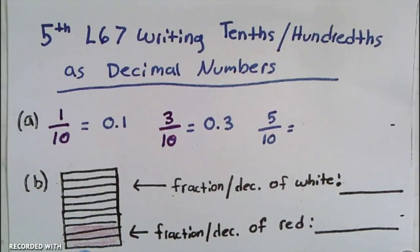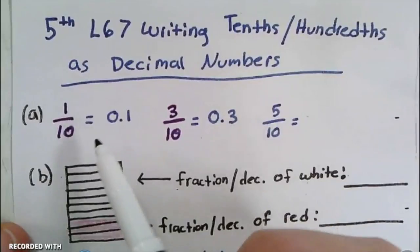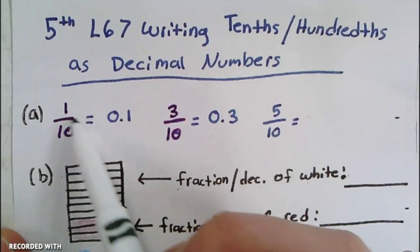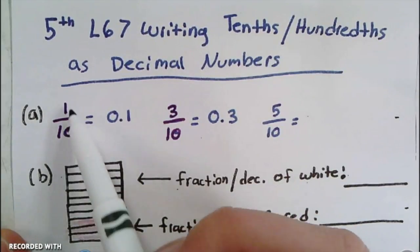Hello fifth graders and welcome to lesson 67 on writing tenths and hundredths as decimal numbers. Here we have example A, which says one-tenth. Notice that the denominator is a 10, and when we read this